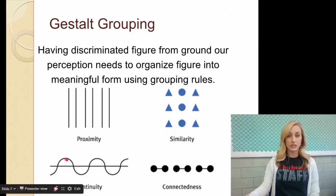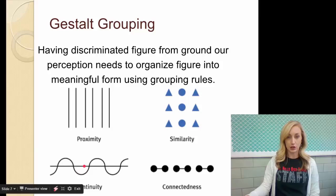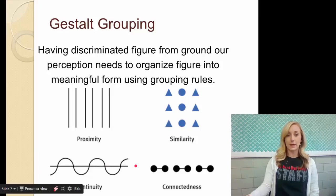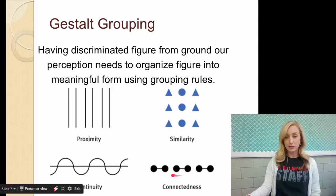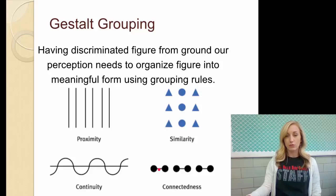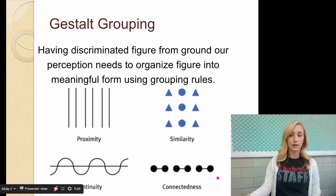Continuity, you see the two continuous lines in this image rather than separate parts of like this shape and then this shape. You don't see the half circle shapes. You see the single straight line and then the waves. Connectedness, you see almost like three dumbbells here. You see the two dots with the stick in the middle rather than a circle, line, circle, circle, line, circle. You see them as connected and therefore as one.